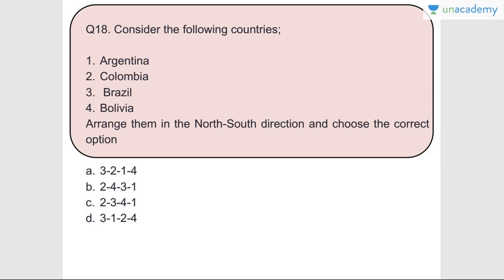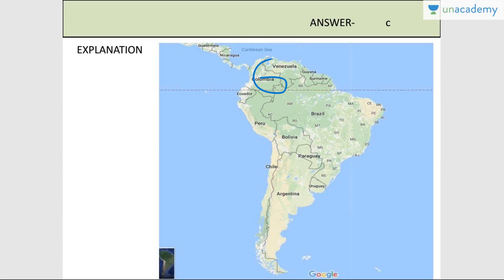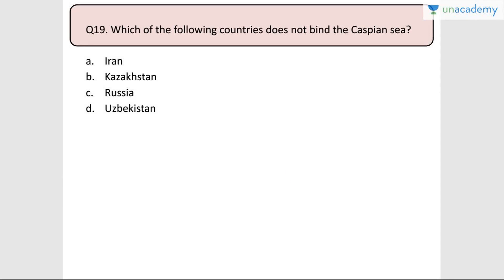Question number eighteen: Arrange the following countries - Argentina, Colombia, Brazil, Bolivia - in north-south direction. The northernmost country is Colombia, which shares borders with both the Pacific Ocean and the Atlantic Ocean. Then comes Brazil, followed by Bolivia, and finally Argentina is the southernmost country. So the order is Colombia, Brazil, Bolivia, Argentina.